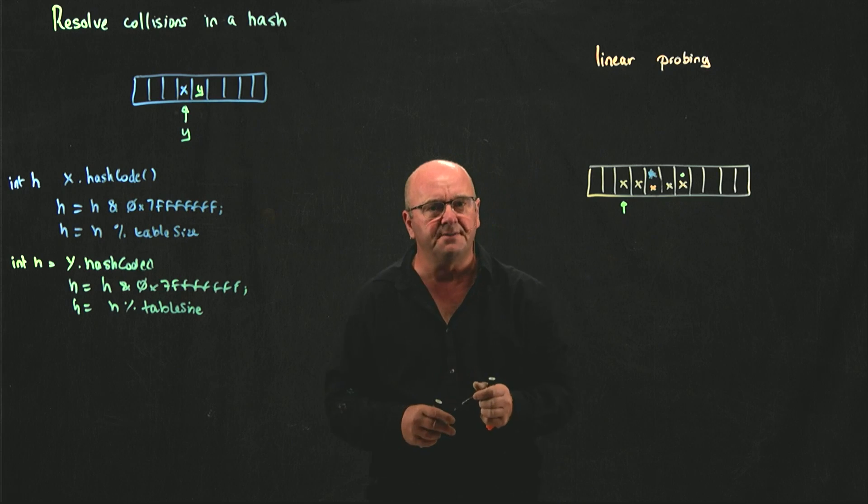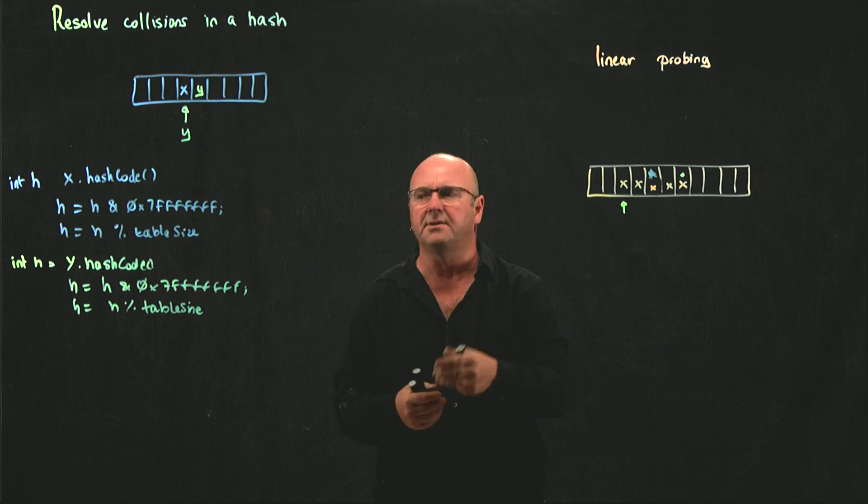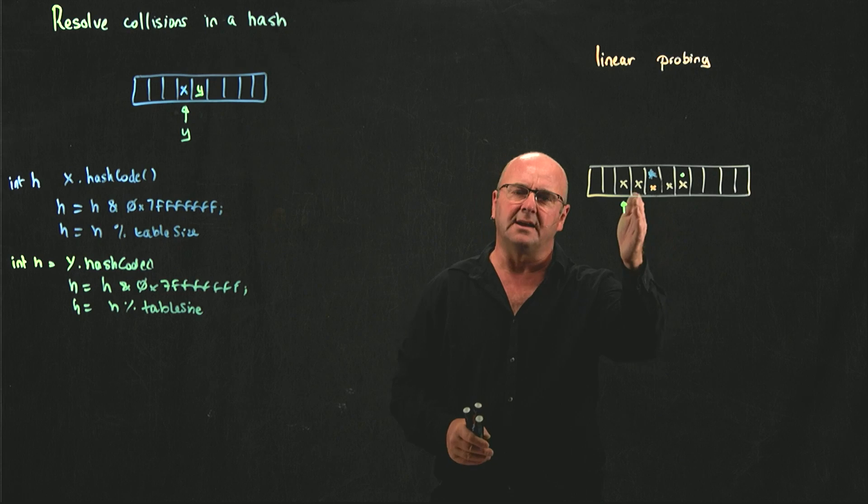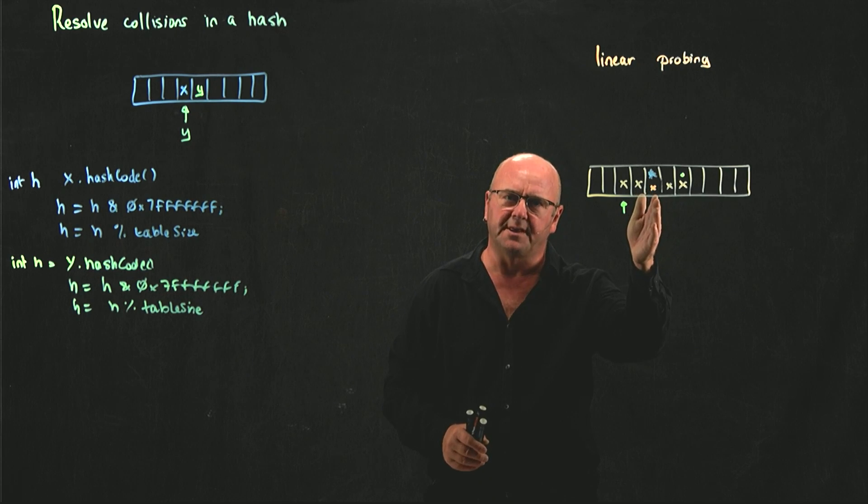So, linear probing is trivial, because we just start with our hash value, and we increment it, and we increment it when we're adding until we get to a null, and then we put the thing there.